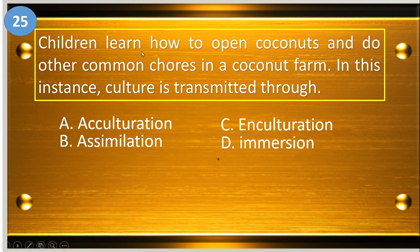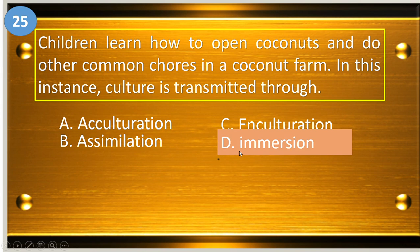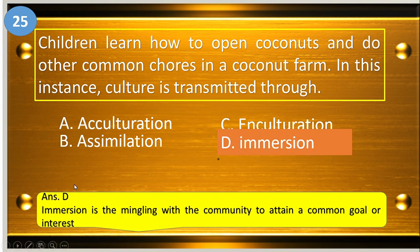Number twenty-five: children learn how to open coconuts and do other common chores in a coconut farm. In this instance, culture is transmitted through — A, acculturation; B, assimilation; C, enculturation; and D, immersion. The answer is immersion.